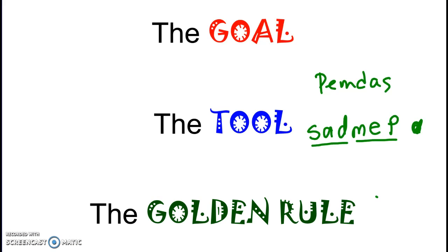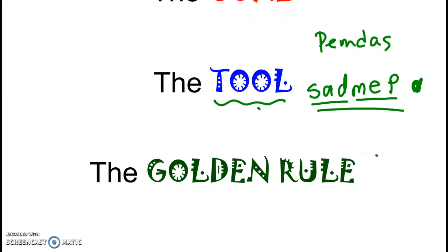To recap the big ideas with solving equations: the goal is to isolate the variable — get it by itself. The tool is inverse operations to cancel things out. Instead of PEMDAS, we follow SADMAP — the reverse order because we're working backwards. And the golden rule: everything has to stay balanced. Whatever you do to one side, you have to do to the other side.